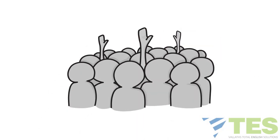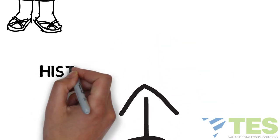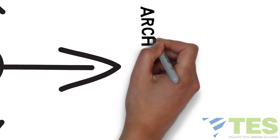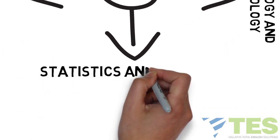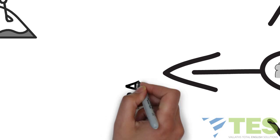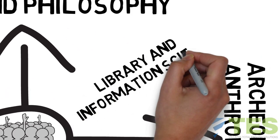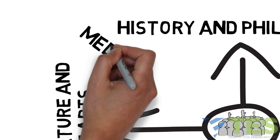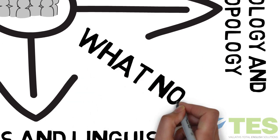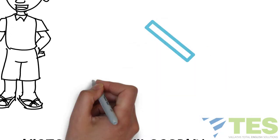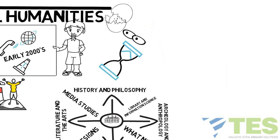Digital humanities is a crossover discipline connecting the social sciences like history and philosophy, archaeology and anthropology, statistics, linguistics, literature, and the arts, library and information science, media studies, design, and more — in a constantly growing and changing field.